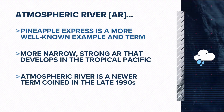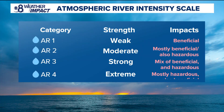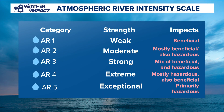Atmospheric rivers also have a scale system very similar to what we'd see for a hurricane. The scale goes from one to five — AR1, AR3, AR5, in numerical order. An AR1 is a weak atmospheric river that brings beneficial rainfall. Here in Southern California, we always say we could use the rain, especially with drought conditions, so a weak atmospheric river is definitely beneficial. A moderate one is mostly beneficial, but some hazards start to pop up, especially with flood concerns.